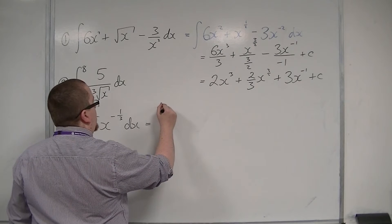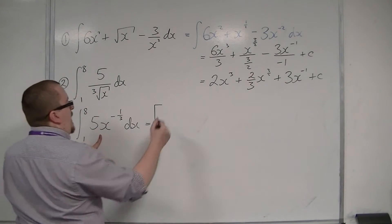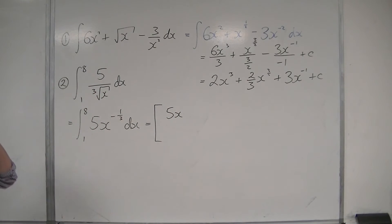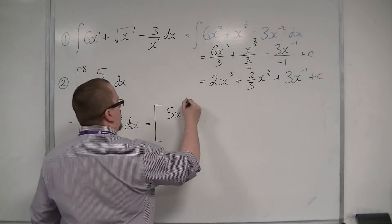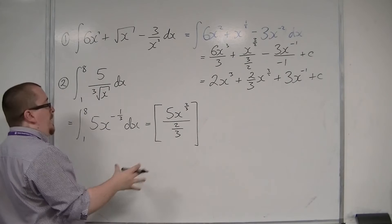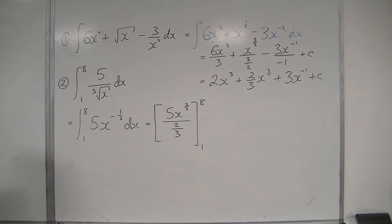Now we're ready to integrate. We put what we are integrating into square brackets because we are also evaluating it. So we're going to add 1 to the power. Adding 1 to minus 1 third is 2 thirds. And I'm going to divide by the 2 thirds. And I'm evaluating that between 1 and 8. The limits of the integral now go on the right-hand side of the box.